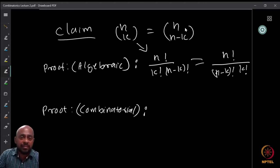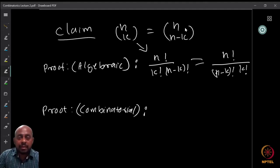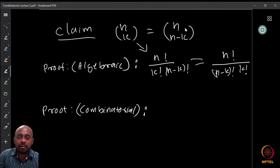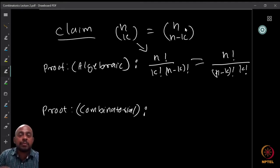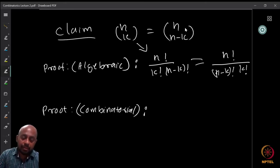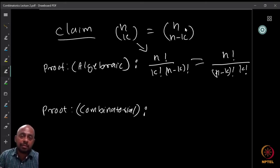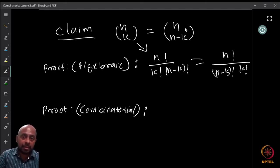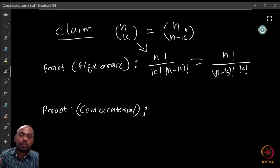But we don't want that — not because it is easy, but because it tells us nothing new that we don't already know. It doesn't explain why they must be the same. It tells us from the algebraic requirement that it must be the same by definition, but intuitively why this happens it doesn't tell us. Therefore we look at combinatorial proofs.